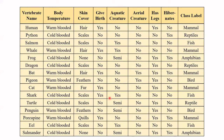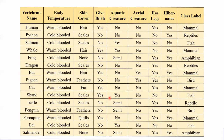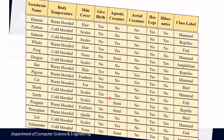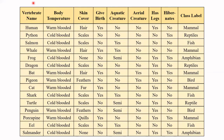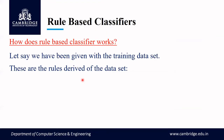This is our training set. The dataset has eight attributes apart from the class label, so the maximum length a rule can have is eight attributes. Now let us consider a few simple rules derived from this dataset.